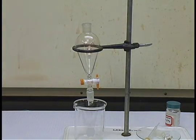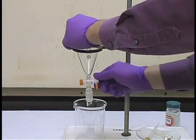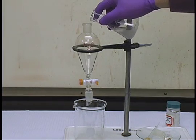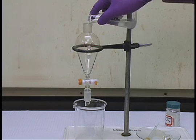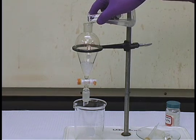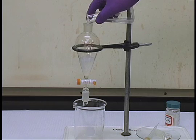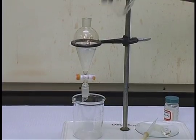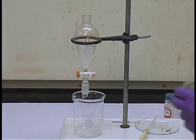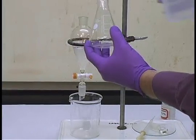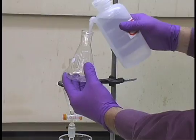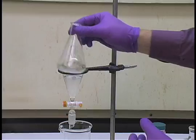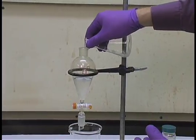When ready to do the extraction, close the stopcock and then pour in the solution to be extracted. In this particular case, it's an aqueous solution, so carefully add the solution, and then rinse the flask with additional solvent to remove any excess solute, swirl, and then pour that into the separatory funnel.